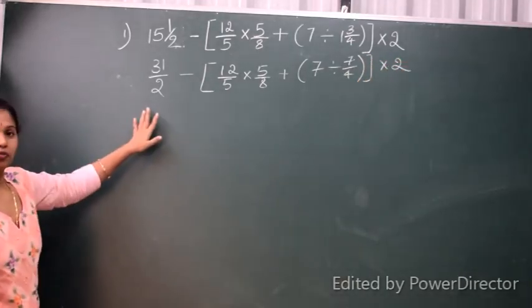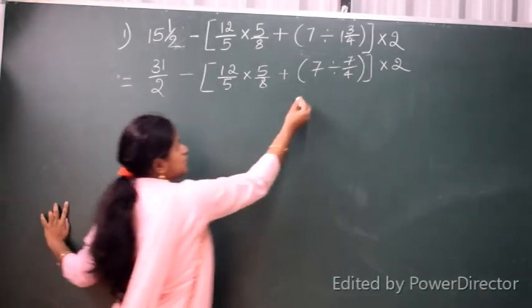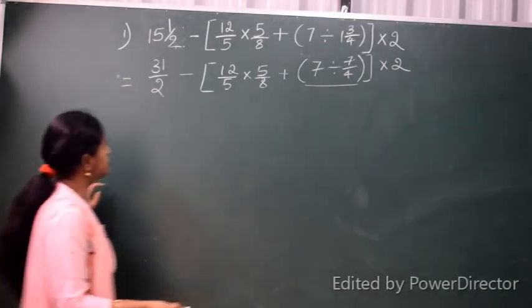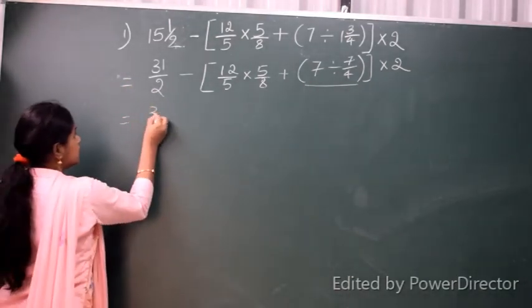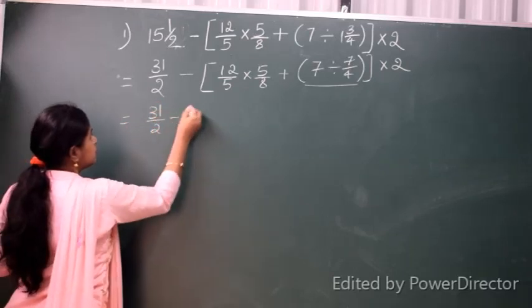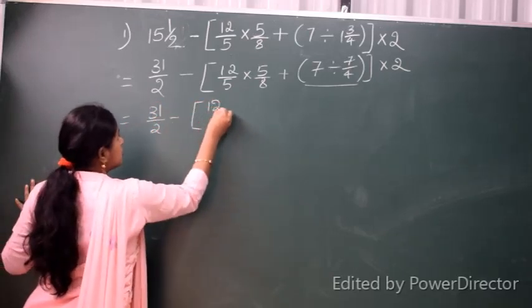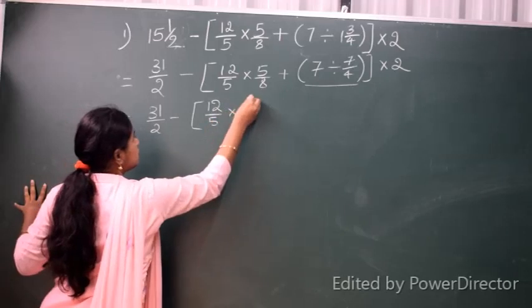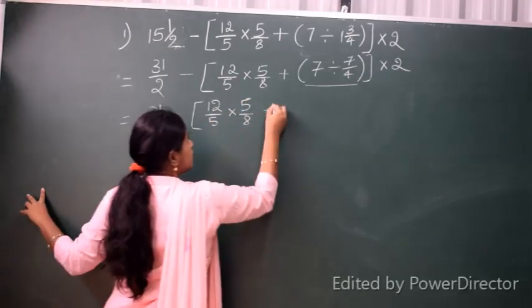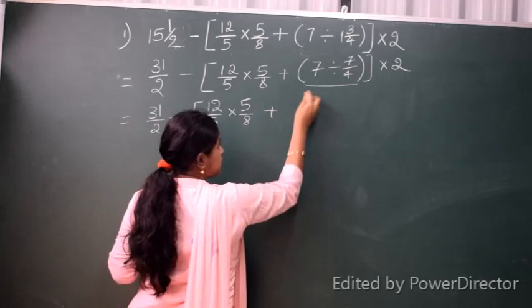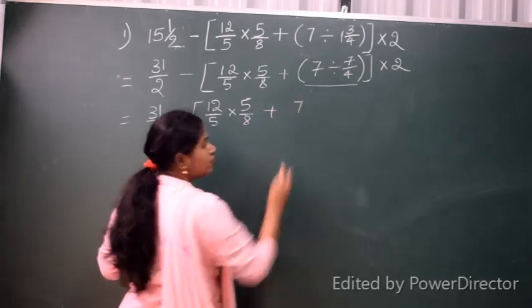Now we have 31/2 minus [12/5 × 5/8 + 7 ÷ 7/4] × 2. For this division, we will convert it to multiplication using the reciprocal.